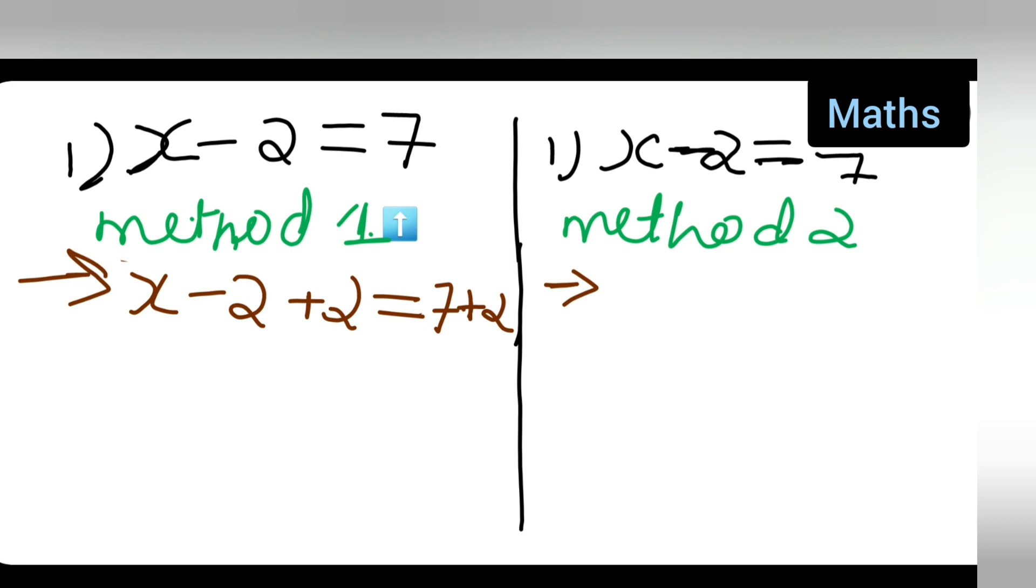So, this will be 7 plus 2. So, x this will be x is equal to this will be 0. Right. So, minus 2 plus 2 is 0. So, x is equal to 7 plus 2 is nothing but 8. So, let us see same way if we are getting this.